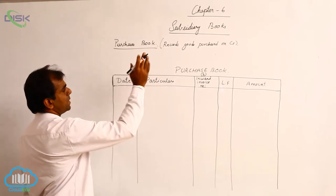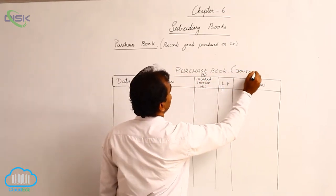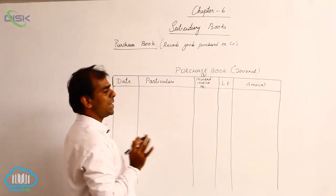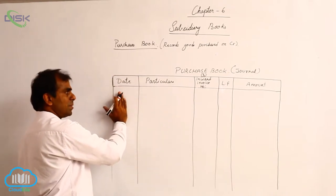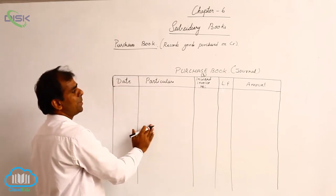Now first, purchase book being a journal, that is special journal, naturally it will have the features of what you have seen in the first book, format of journal entries. For example, we have a date, so here also we have a date. There we have particulars, here also we have particulars.